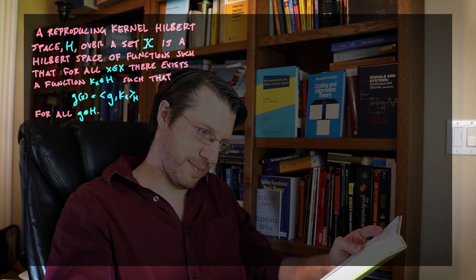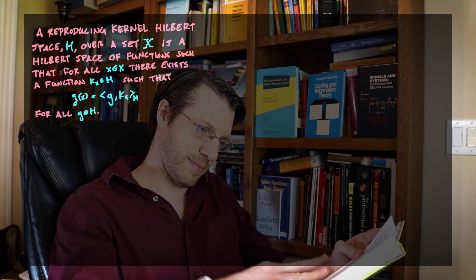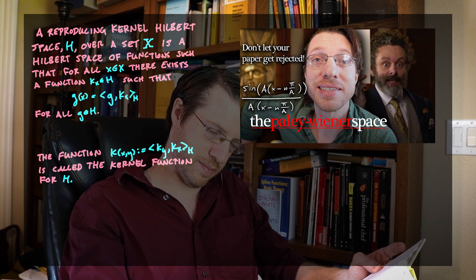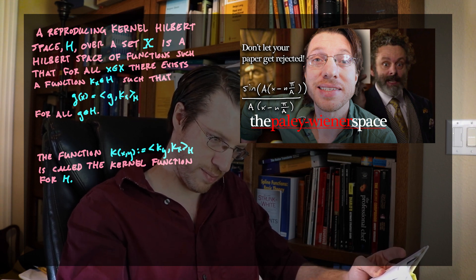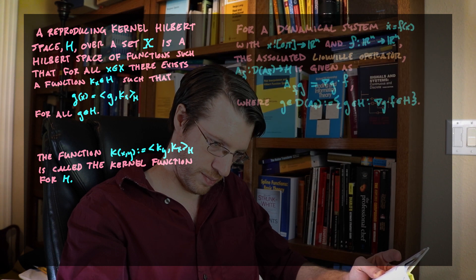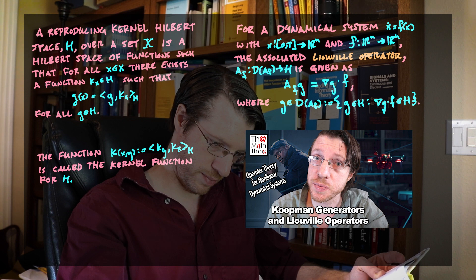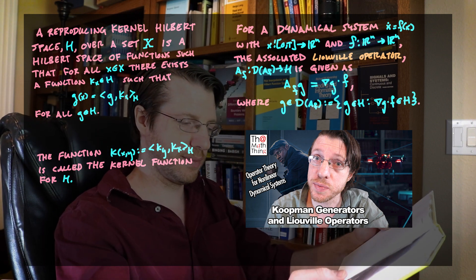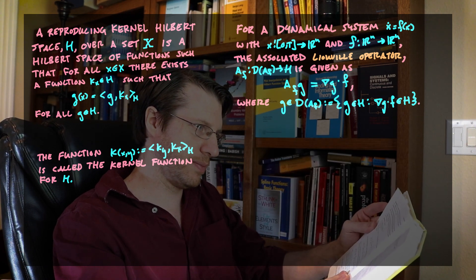We're going to start by talking about the property of kernel functions. Kernel functions are the central object in sampling theory. This goes back to Shannon's work on what is now called the Shannon-Nyquist sampling theorem, where Hardy put that on solid footing using the Paley-Wiener reproducing kernel Hilbert space. Critical to this idea is that we're going to be working with densely defined operators, so we need to show that the domain itself has various properties that will allow us to get good characterizations out of our dynamics. The first thing we want to talk about is the fact that kernel functions span their space.